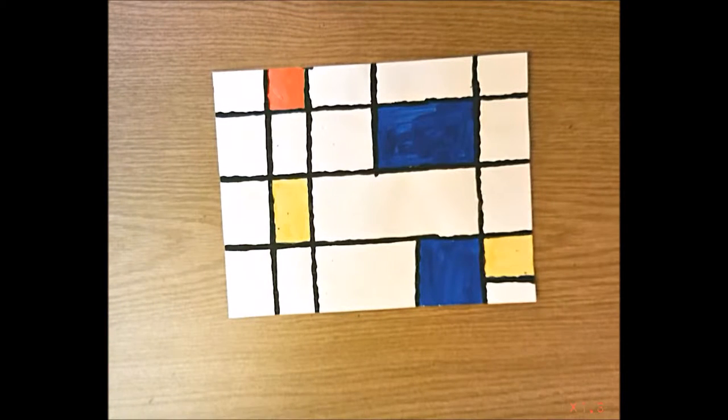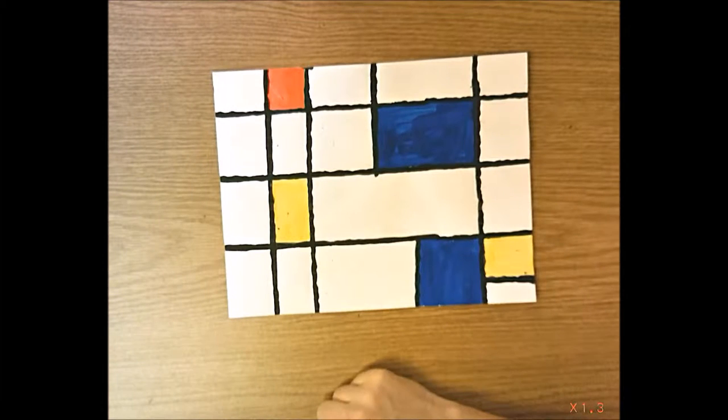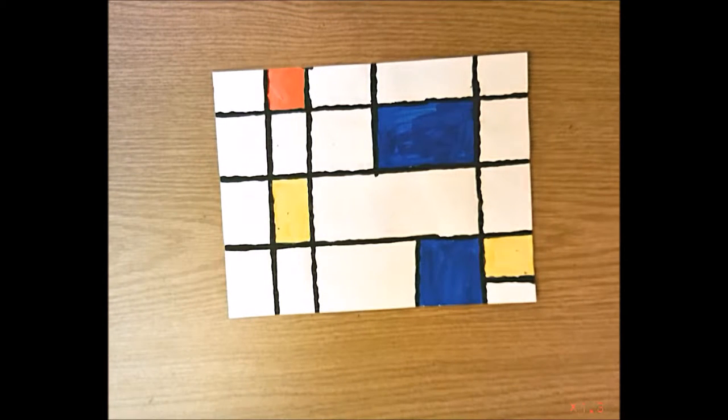Hello, so today we're going to start this Mondrian painting. We talked about the artist Pete Mondrian, his use of vertical and horizontal lines. Vertical lines go up and down, horizontal lines go side to side. He also limited his color palette, limited the colors that he used to only the primary colors. He didn't use every single color, he chose to limit it to just the three primaries. Today we are going to create a painting similar to Pete Mondrian's.